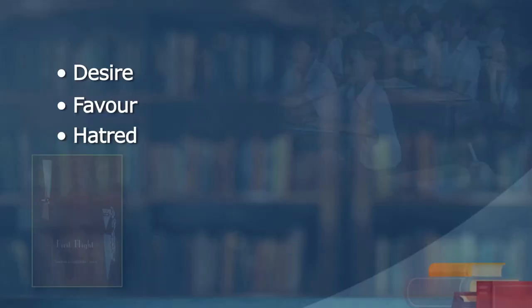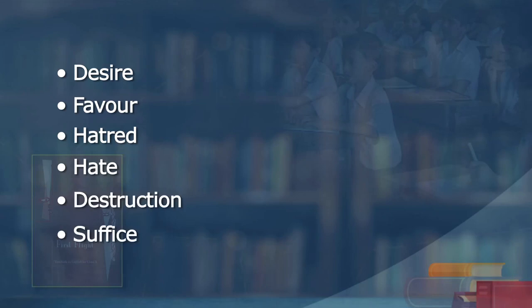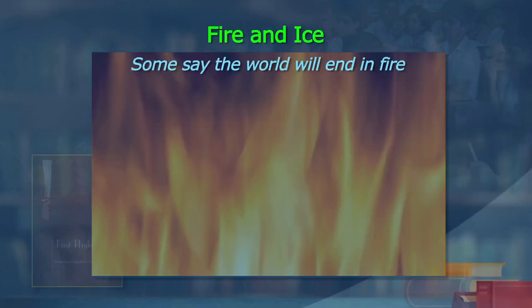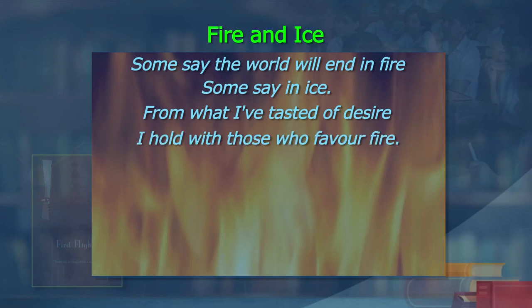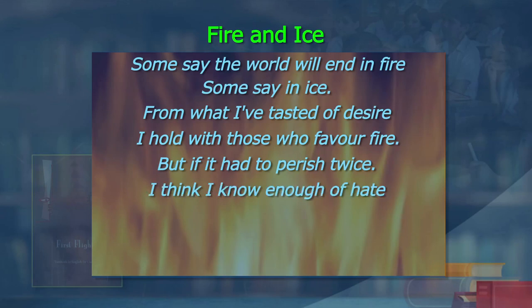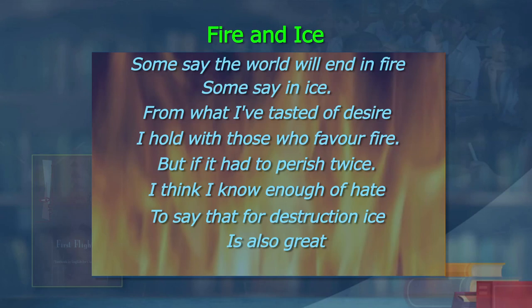Because it is modern poetry with free verse, there is no meter control. But ideas are important. What makes a poem great? The idea, and the use of selective words. The poet uses desire, favour, hatred, hate, destruction, suffice. Let us do one final reading. 'Some say the world will end in fire, some say in ice. From what I have tasted of desire, I hold with those who favour fire. But if it had to perish twice, I think I know enough of hate to say that for destruction, ice is also great and would suffice.'